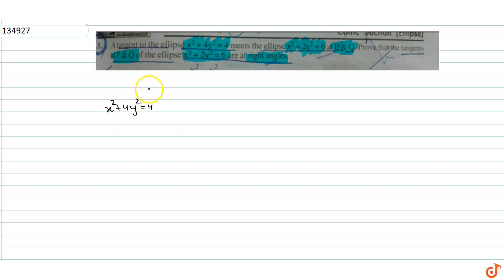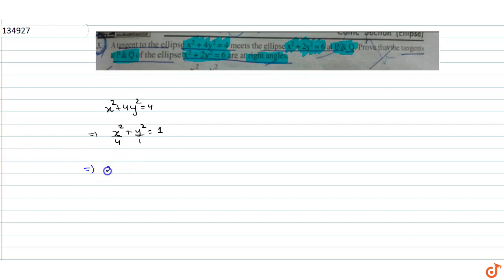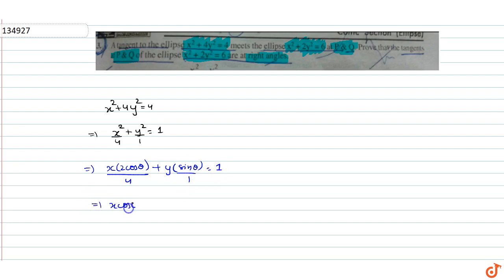We have the first ellipse given: x² + 4y² = 4, that is x²/4 + y²/1 = 1. The tangent to this ellipse is x·cosθ/2 + y·sinθ/1 = 1. We give this equation number 1.